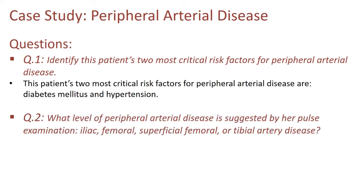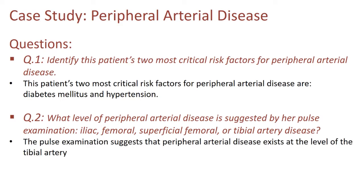Second question: what level of peripheral arterial disease is suggested by her pulse examination? Is it iliac, femoral, superficial femoral, or tibial artery disease? The pulse examination suggests that peripheral arterial disease exists at the level of the tibial artery.